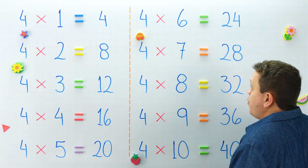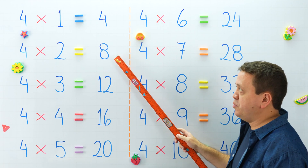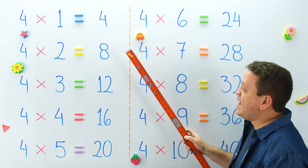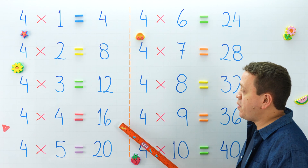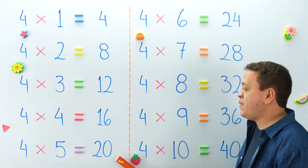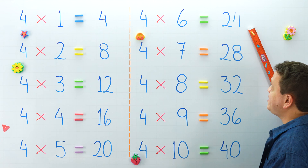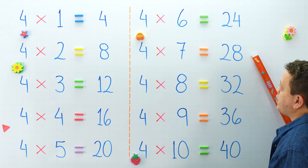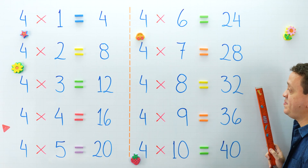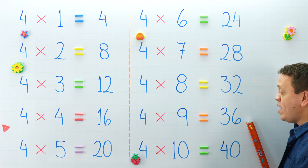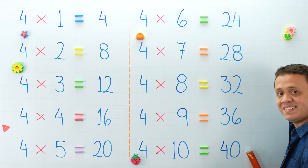Let's check our products. 4 times 1 is equal to? What is 4 times 2? And 4 times 3 is equal to? 4 times 4 equals? And 4 times 5 equals? This side: 4 times 6 equals? And 4 times 7 is equal to? 4 times 8 equals? 4 times 9 equals? One more please: 4 times 10 equals? You got it.